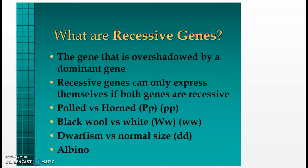For black wool versus white wool, the uppercase W is black and lowercase w is white. When both genes are present, the black will overshadow the white. Only when there are two lowercase w's representing white will the white wool show through. Also, dwarfism versus actual animal size is represented by two lowercase d's. An albino is also another recessive gene.